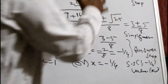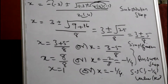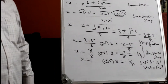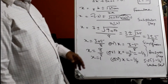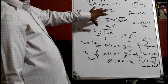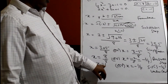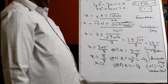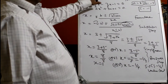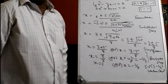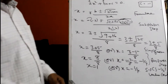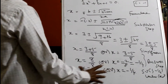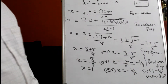This is the formula method: write the formula, substitute the values, simplify and get an answer. That factorization method is faster, but formula method is more foolproof. If irrational values come — decimals and all — this method is the only one you can do; you can't do factorization then. First we are doing sums where you get rational answers.